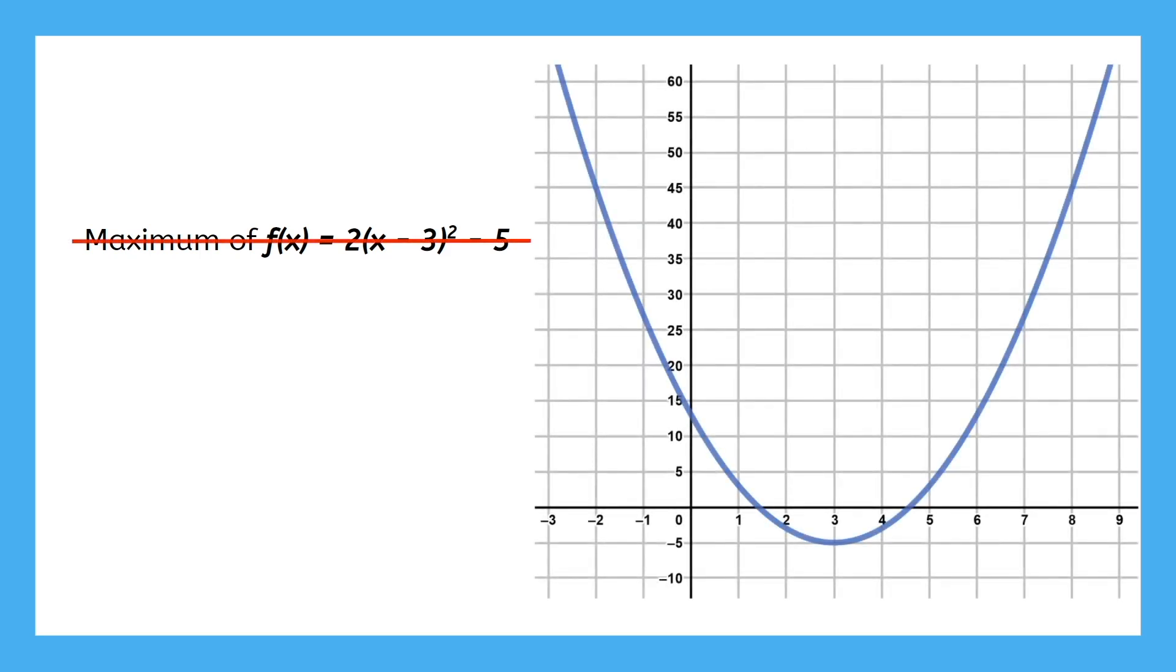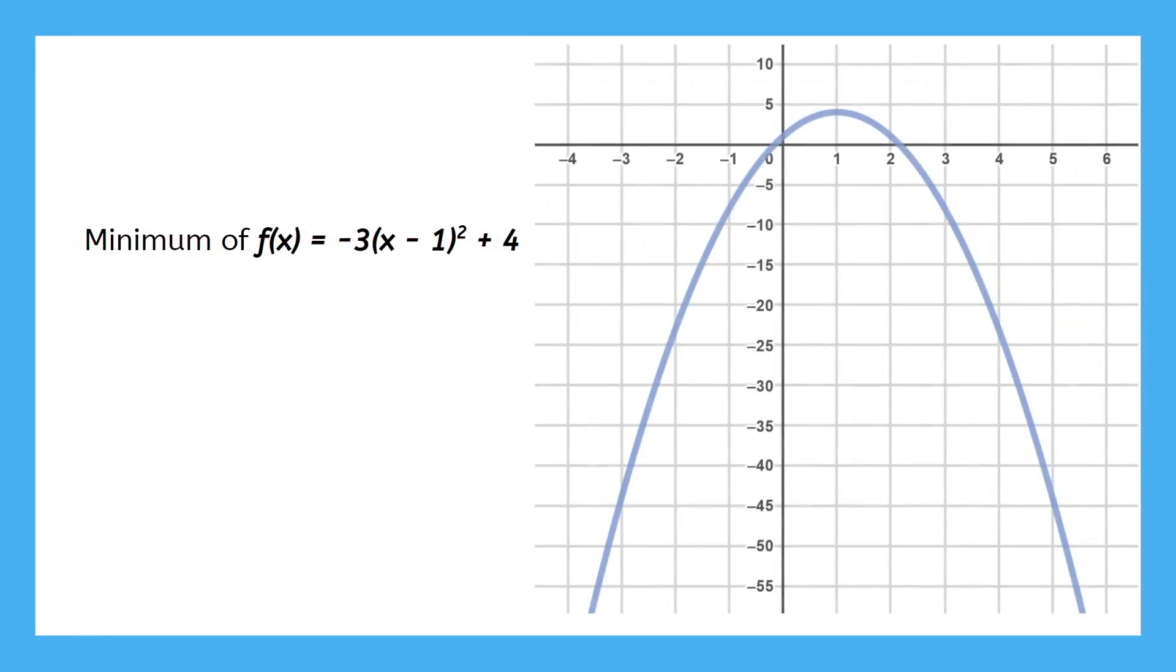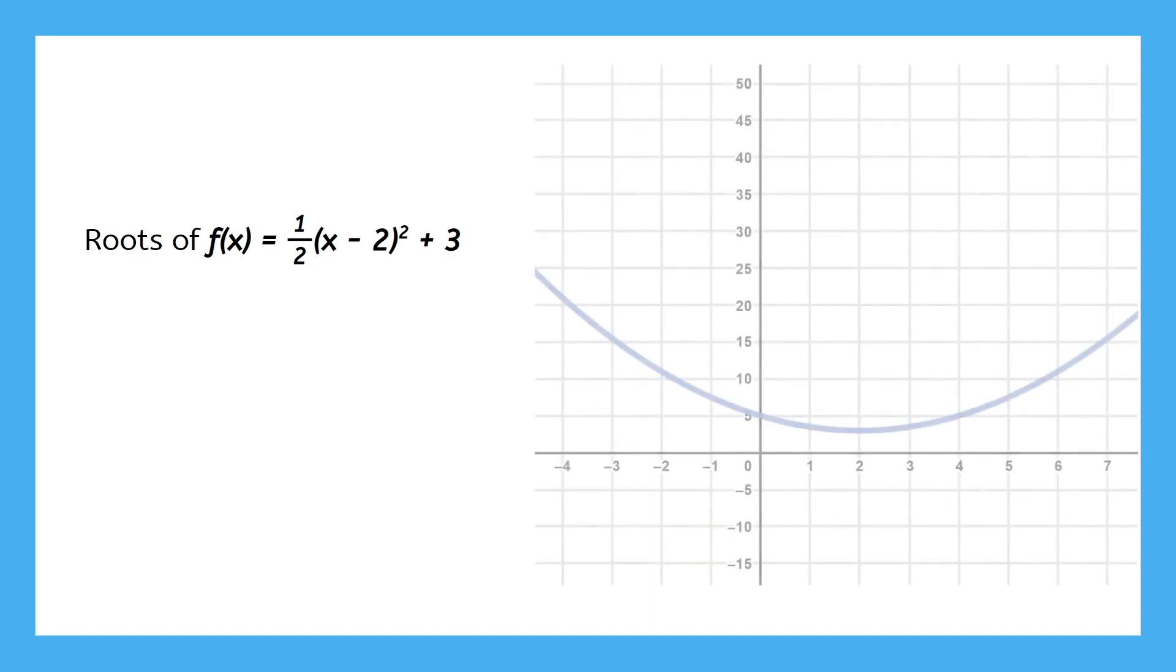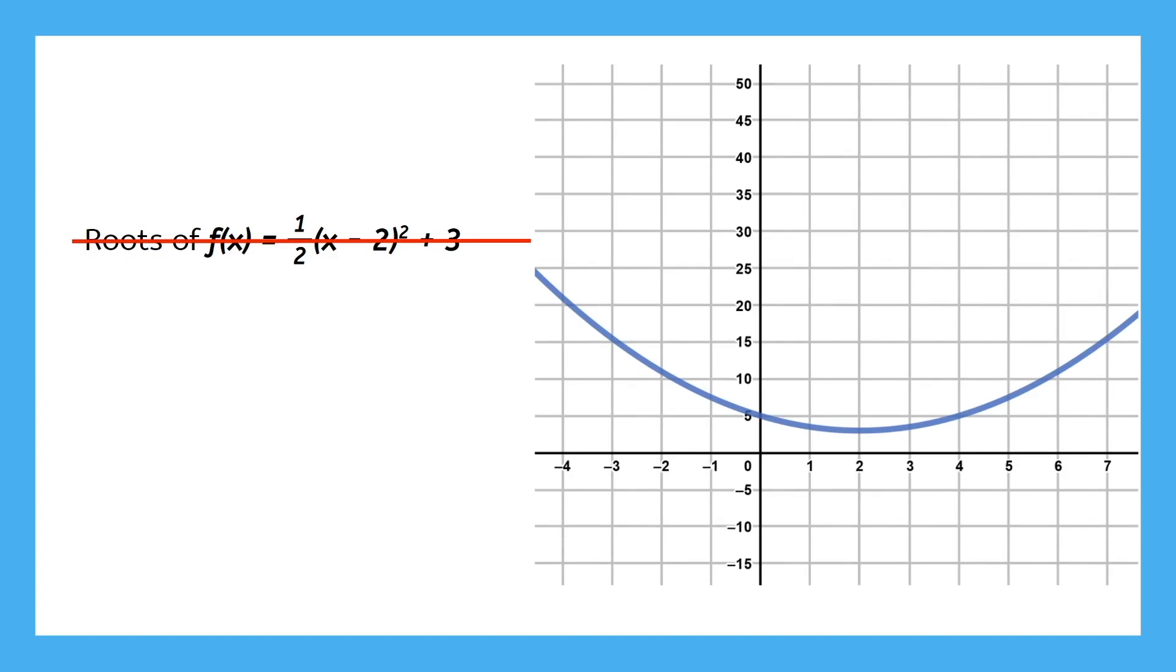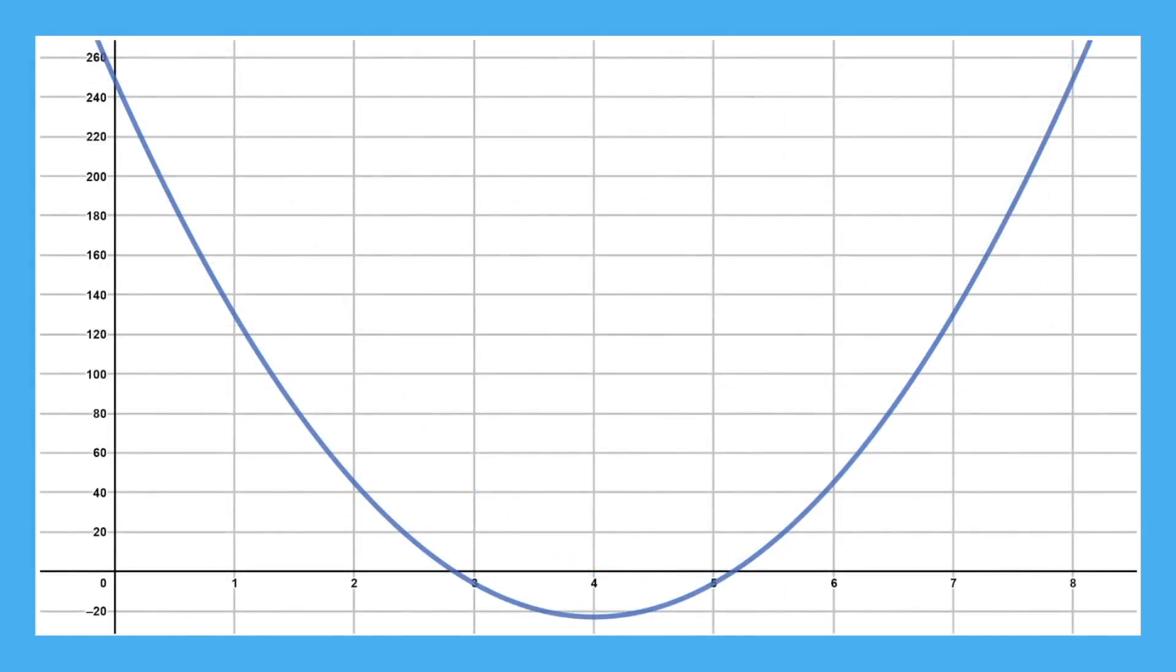A word of warning here, be careful of scenarios with no answer. If a problem gives you a function with a positive coefficient and asks for a maximum, there isn't one. There's only a minimum. Same thing goes with minimums of functions with negative coefficients. No minimum, just a maximum. And some parabolas never touch the x-axis, so a question about its roots won't have any answer. On the plus side, every parabola has a y-intercept. You might just have to zoom out pretty far to see it.